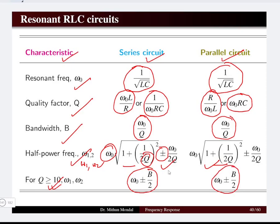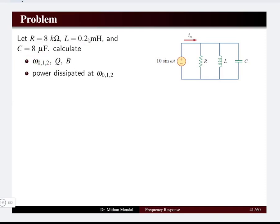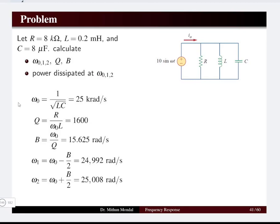We will now solve one problem to understand the parallel RLC network. Given a parallel RLC network where resistance is 8 kΩ, inductance is 0.2 mH, and capacitance is 8 μF, we need to determine the resonant frequency, half-power frequencies ω1 and ω2, quality factor, and bandwidth, as well as the power dissipated at the resonant frequency and the half-power frequency. First, the resonant frequency is 1 over the square root of LC.